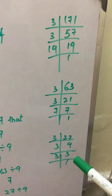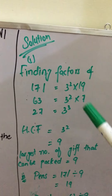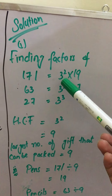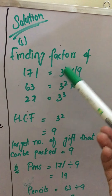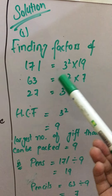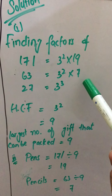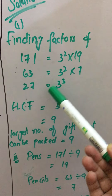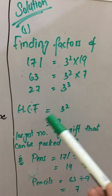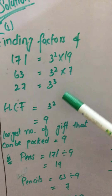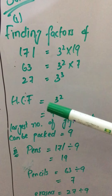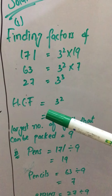The factor of 171 is 3 × 3 × 19, which can be written as 3² × 19. The factor of 63 is 3² × 7, and 27 is equal to 3³. The HCF of all these numbers is 3², because 3² is the highest power of 3 common in all the factors.